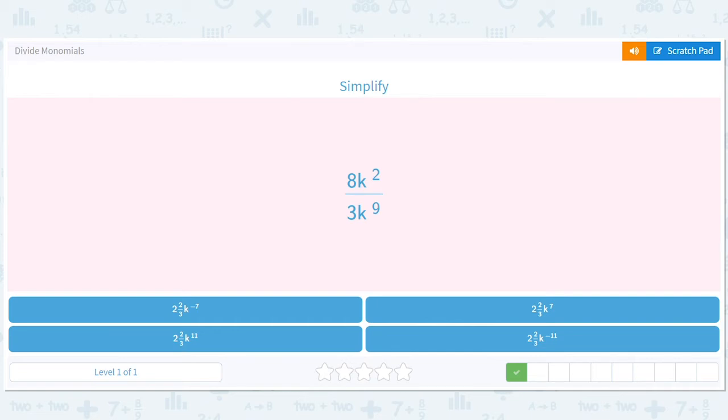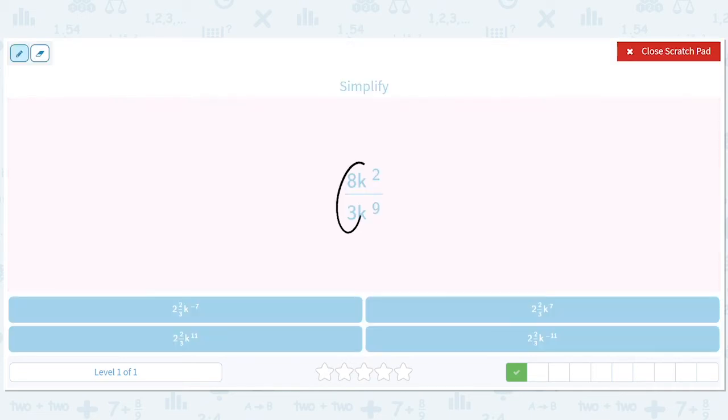So how about this? We've got 8 thirds, which we'll write as an improper fraction, right? So that's the same as 6 thirds plus 2 thirds.